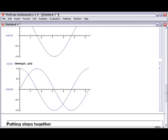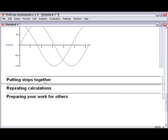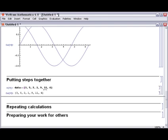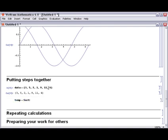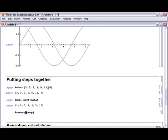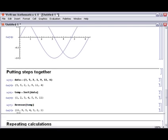It can be very useful to see the progress of your calculations one step at a time. But sometimes, you want to put the steps together. Let's look at an example. Here, we're taking some data, and we can store data just like any other object in a variable in Mathematica. Here we're going to sort that data, and finally, we'll reverse the output of that result to get the reverse-sorted data.